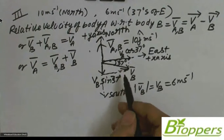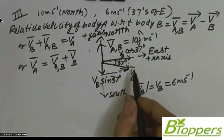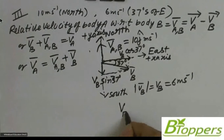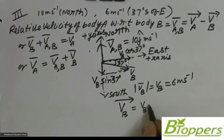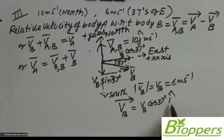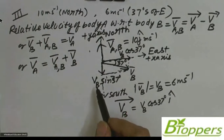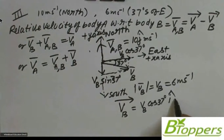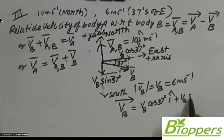In vector form, V_B can be written as V_B cos 37 degrees into i-cap, and since the component with magnitude V_B sin 37 degrees is towards south — meaning in the negative direction of the y-axis — you write it as minus V_B sin 37 degrees into j-cap.